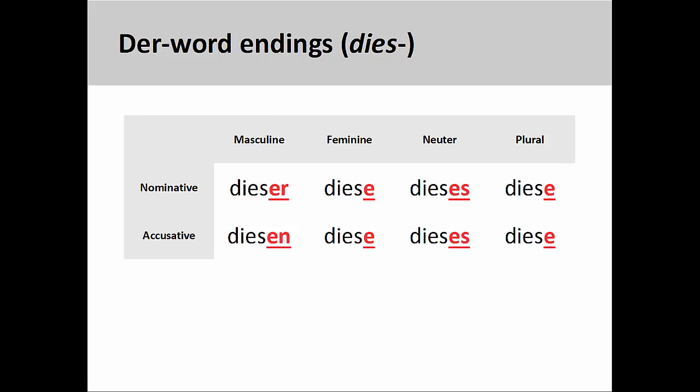This slide shows these der-word endings using the demonstrative pronoun 'dies,' meaning 'this.'